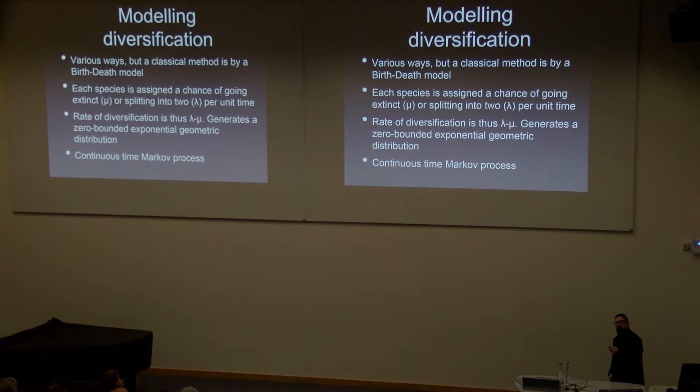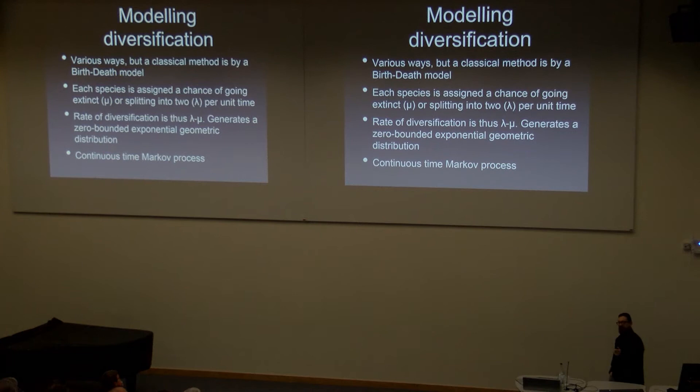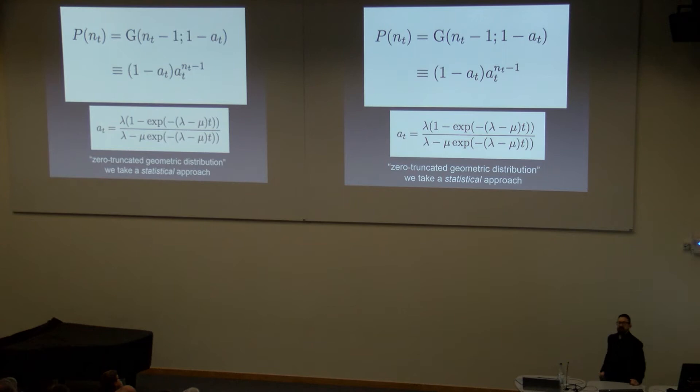You can model this as a continuous time Markov process, and it generates a zero-bounded exponential geometric distribution, which means that you start off with not very many and you end up with an awful lot. This is what a bit of the maths looks like, just to show that Richard did some work. And we're taking a statistical approach, which means we're not just trying to infer central values, but we're trying to look at the range of possible outcomes that these kinds of models can generate.